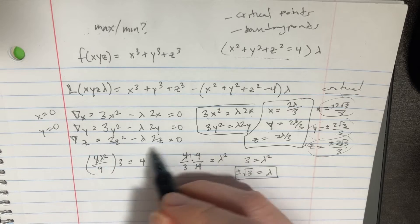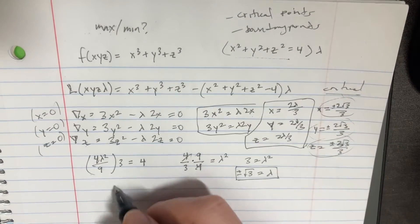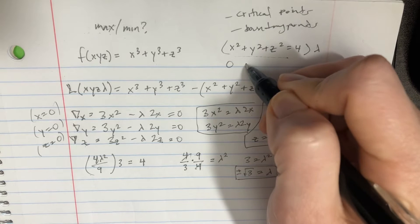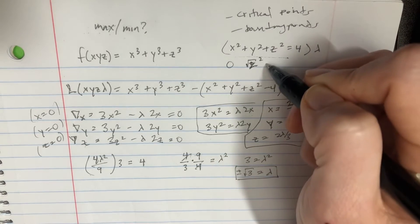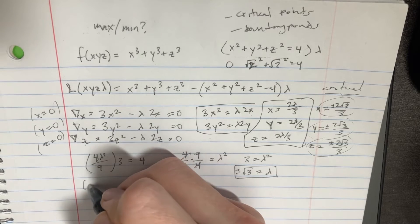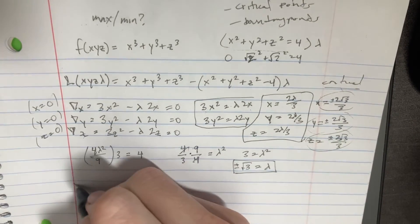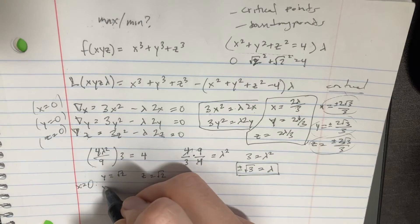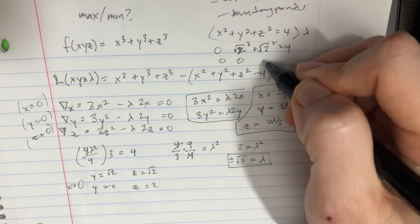If x = 0, the constraint becomes y² + z² = 4. That works with y = √2 and z = √2, since (√2)² + (√2)² = 4. Or if y = 0 as well, then z must equal 2, since 0 + 0 + 2² = 4. There are many combinations to consider.